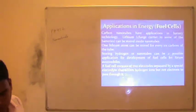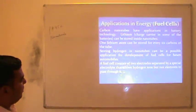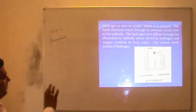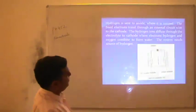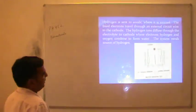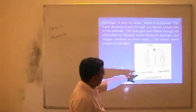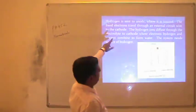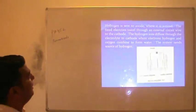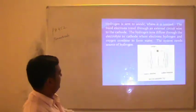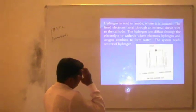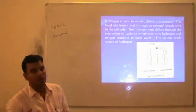A fuel cell consists of two electrodes separated by a special electrolyte that allows hydrogen ions but not electrons to pass through it. Hydrogen is sent to the anode where it is ionized. The freed electrons serve through an external circuit to the cathode, while hydrogen ions diffuse through the electrolyte to the cathode where electrons, hydrogen, and oxygen combine to form water. The system needs a source of hydrogen. Whenever we have a source of hydrogen, it is possible to ionize the hydrogen and use it as a fuel.